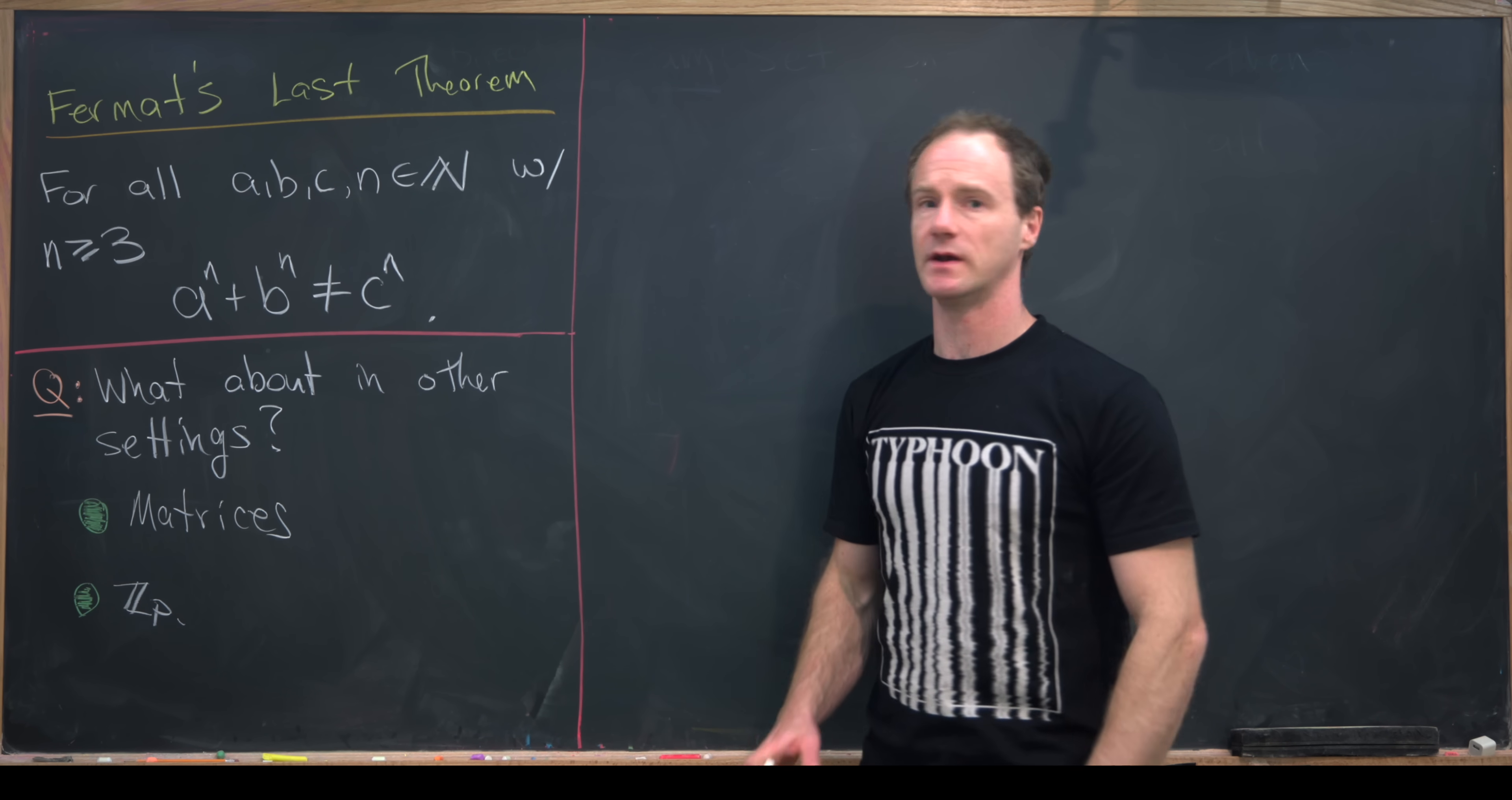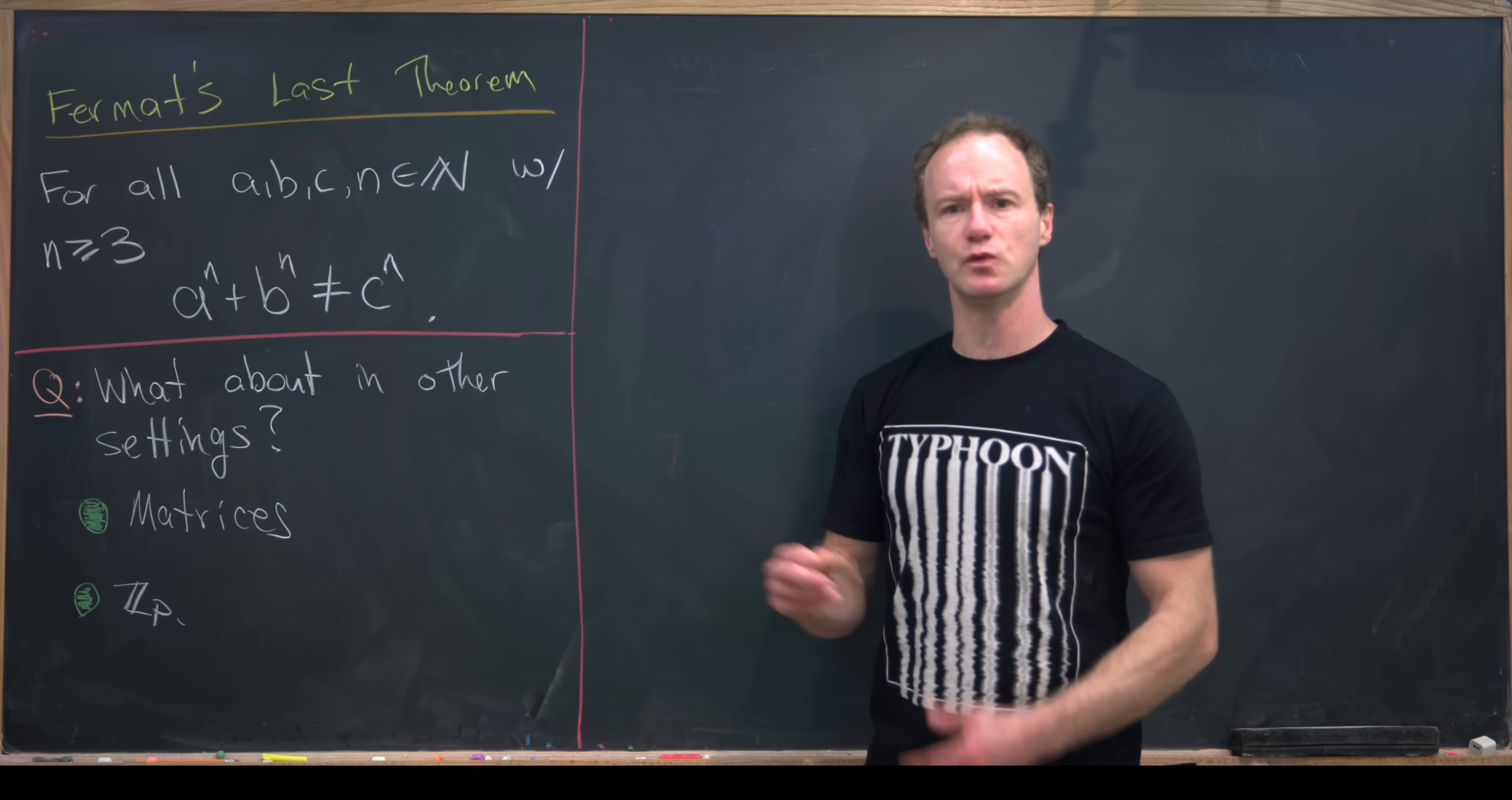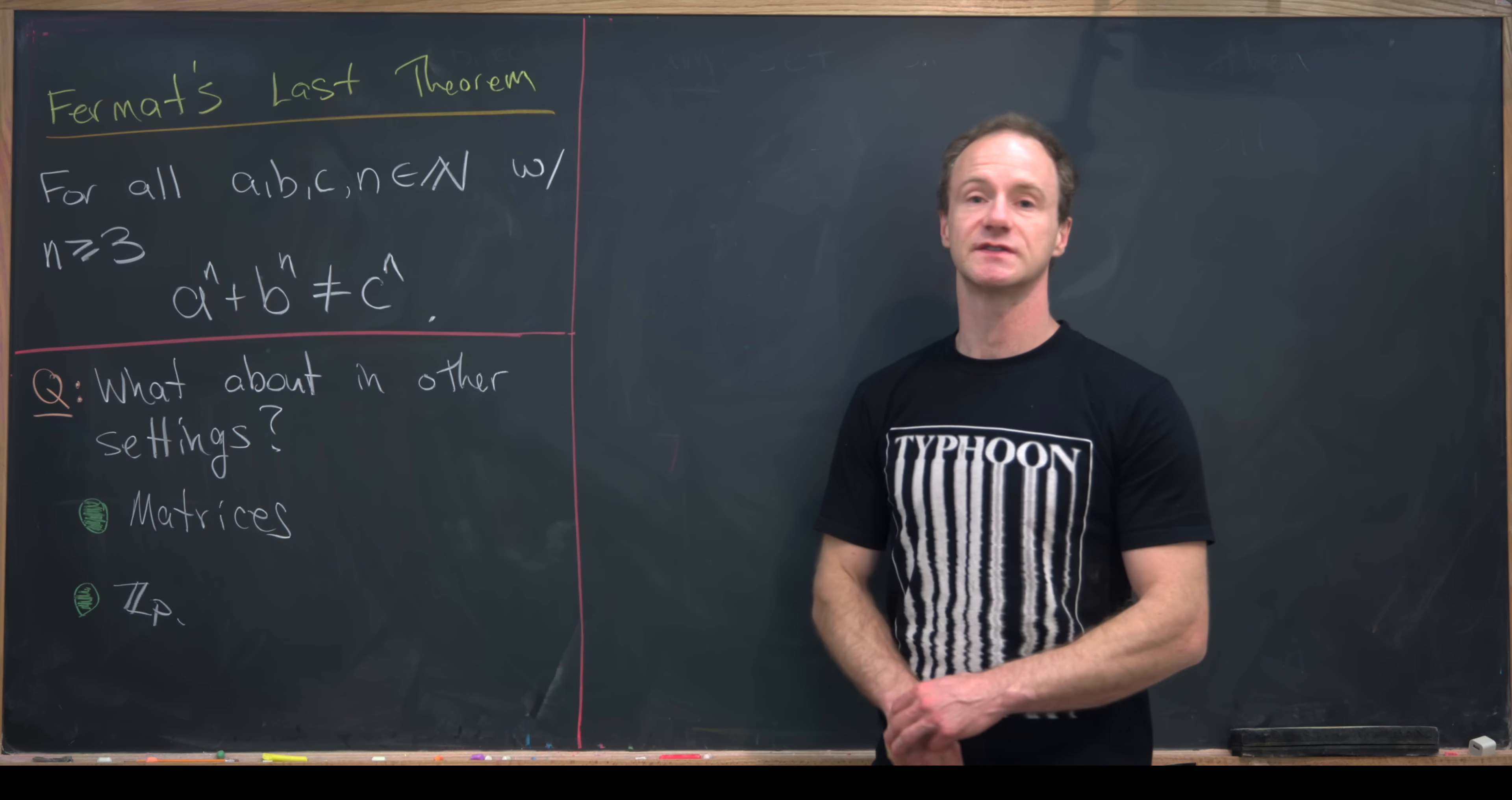Obviously, if n is equal to 1, there are a ton of solutions to this, and if n is equal to 2, we get the Pythagorean triples. And so the really important thing here is that n is bigger than or equal to 3, and there are no solutions.